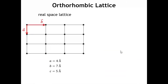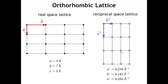Looking at an orthorhombic lattice where A, B, and C are all different lengths but still perpendicular, and choosing some arbitrary values for the lattice vector lengths, the reciprocal space lattice would look as shown. For orthogonal crystal systems—cubic, tetragonal, orthorhombic—A and A-star are parallel, B and B-star are parallel, and C and C-star are parallel; only the lengths change. Here, A in the real space lattice is smaller than B, so that relationship is inverted in the reciprocal space lattice.